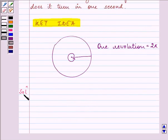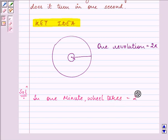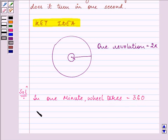So, it's given to us in the question that in one minute wheel takes 360 revolutions.